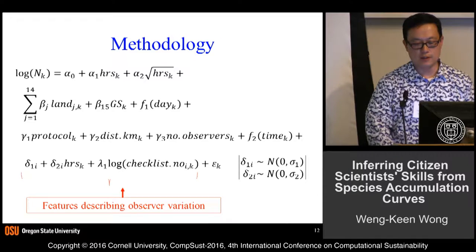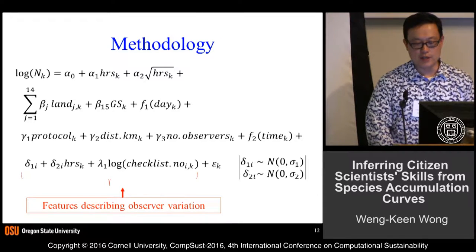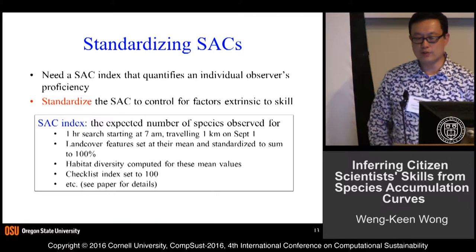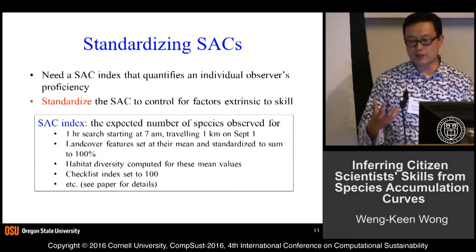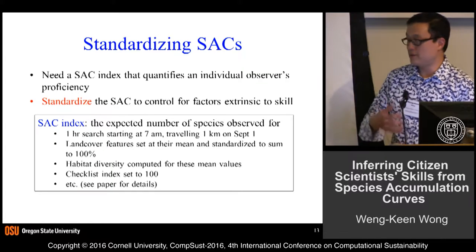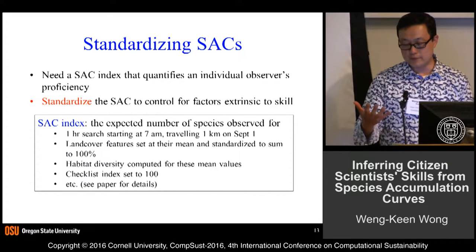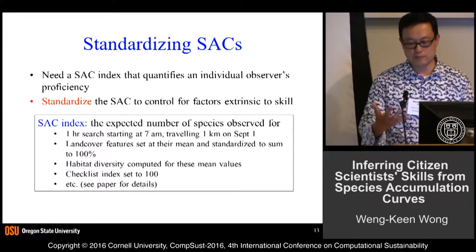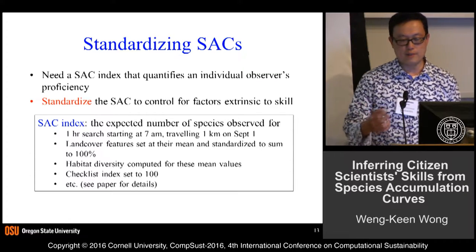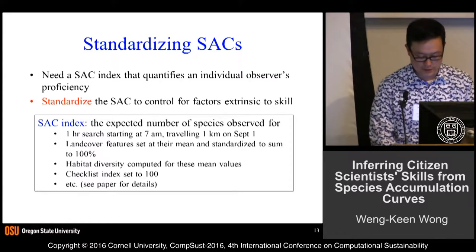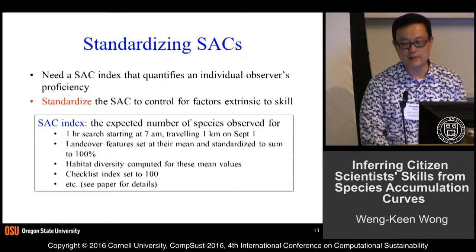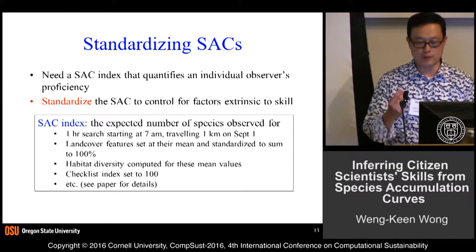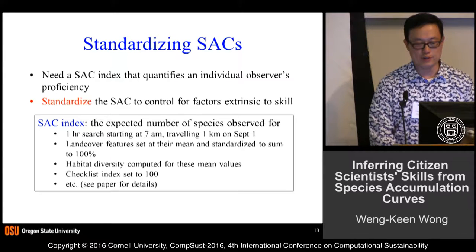Using this model, we build what's called a species accumulation curve index, which quantifies an individual observer's proficiency. It's essentially the expected number of species an individual observer would see, standardized by setting some covariates to their expected values. I won't have time to go through all the details here, but I'll refer you to the paper. This index provides a nice one-number summary of skill level.